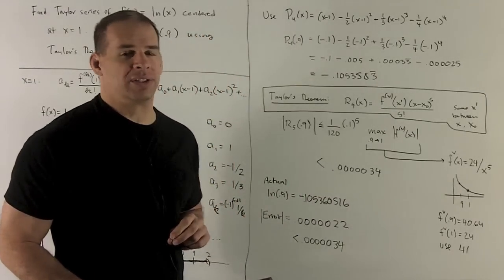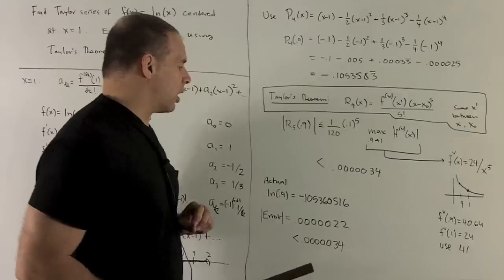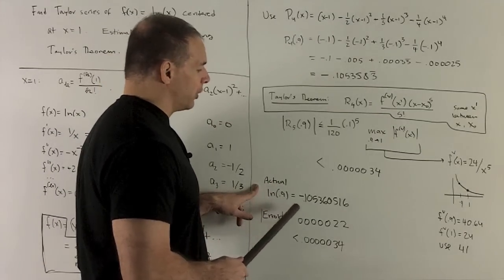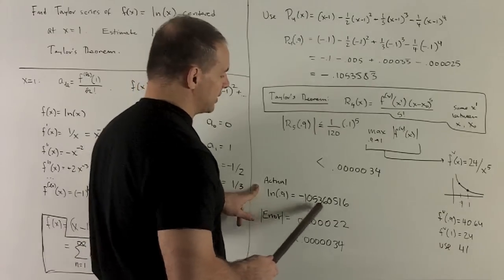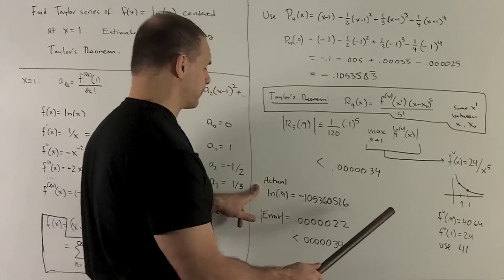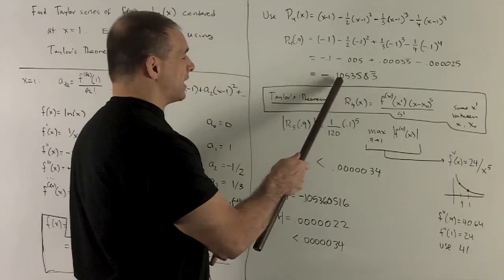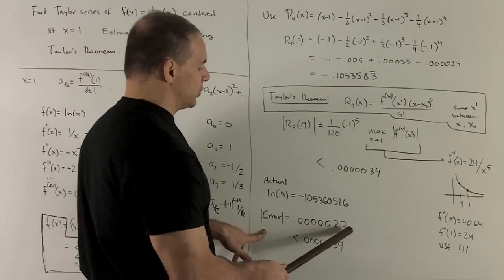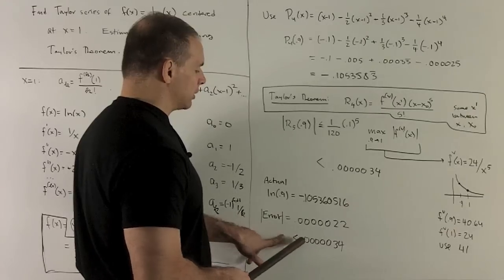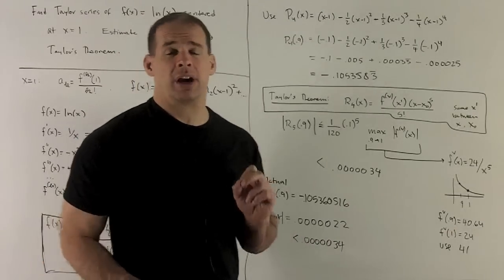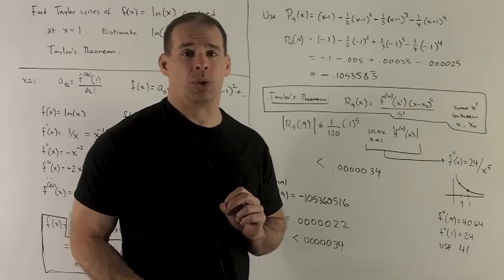Let's take a look at what the actual value is to see how bad the error is. Our actual value for natural log of 0.9, you go to the calculator, and you get this guy, minus 0.10536, and so on. So we check against our estimate up here. What's our error? Well, you got five zeros and then 2.2, and then you know that's going to be strictly less than five zeros, 3.4. So Taylor's theorem is nailing down our actual error.